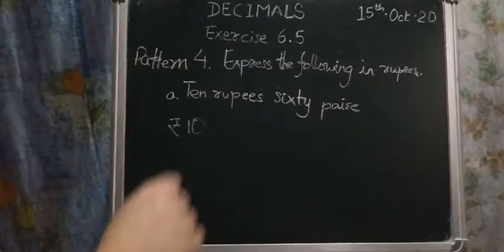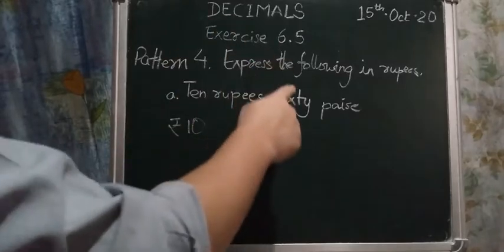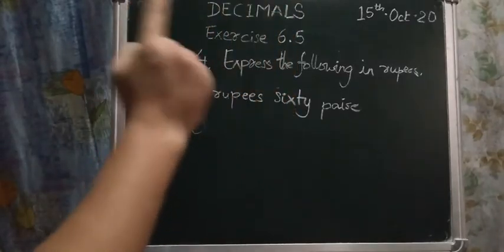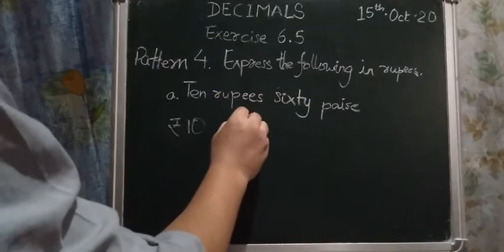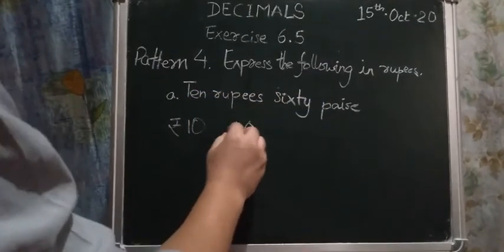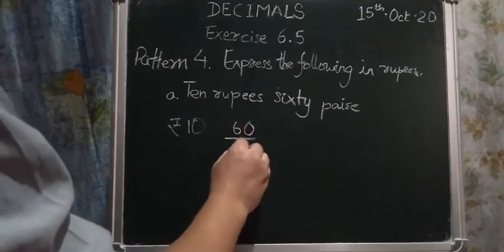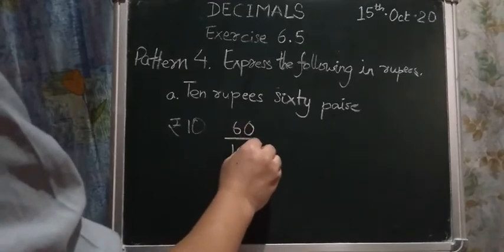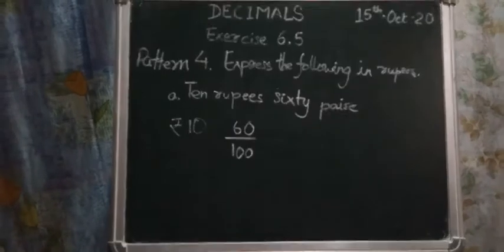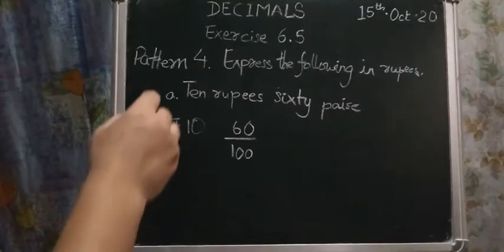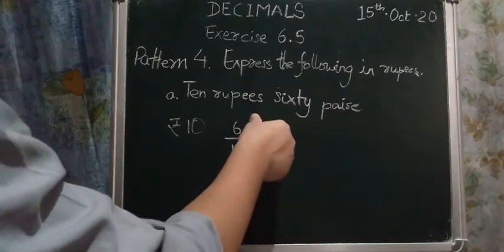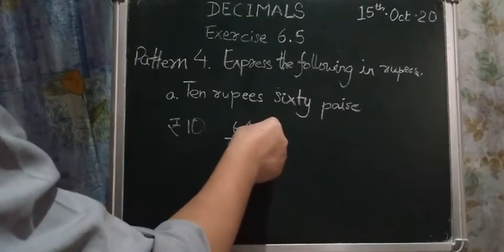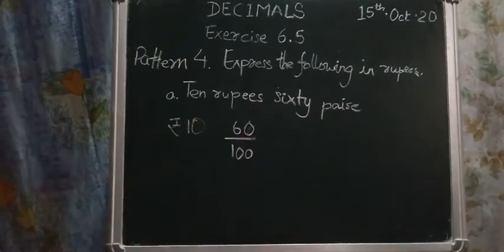And 60 paisa. Now, 60 paisa - I said 1 rupee is equal to 100 paisa, so if I have to change 60 paisa, I have to change it by dividing it by 100.